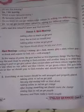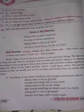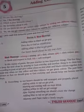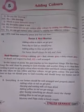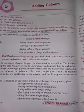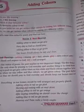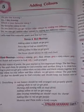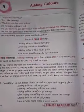The poet further advises us that we should pray to God every day and keep our home neat and clean. Now the second stanza: Everything in our home should be well arranged and properly placed. Adding white to red we get pink — morning and evening milk we must drink. Adding yellow to red we get orange — after buying something we should count the change.